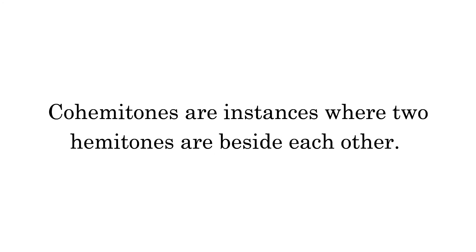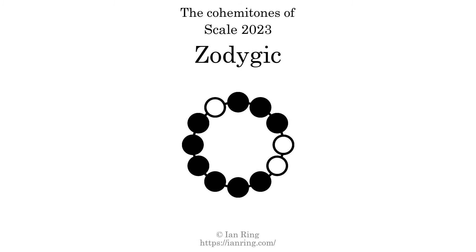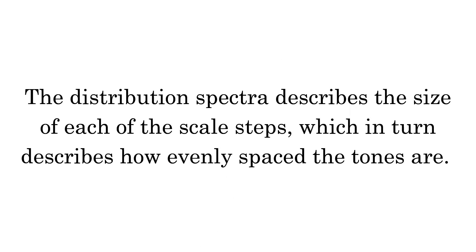Cohemitones are instances where two hemitones are beside each other. This scale has five cohemitones, at the indicated positions.